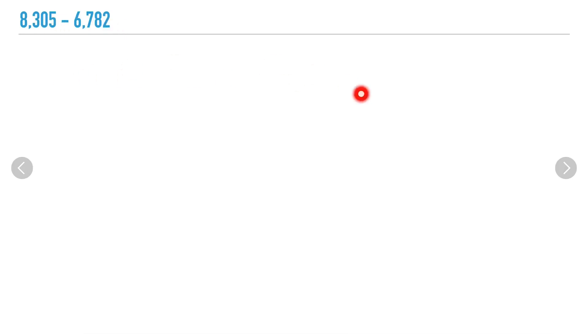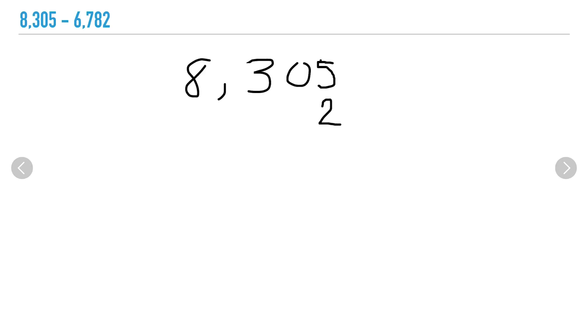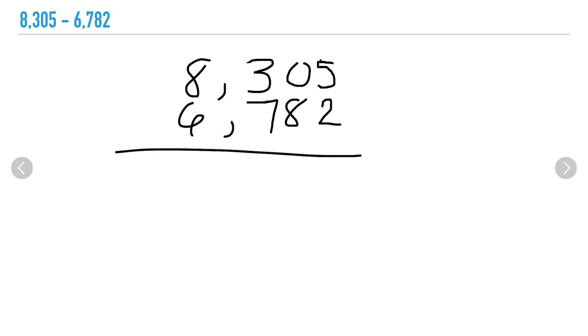You can line them up by starting with your ones, or you can also line them up using a place value chart. I'm going to start with my ones and make sure that my ones are in the same place value, and now I'm going to fill in the rest of my number. Now that my numbers are lined up based on their place value, it's time to subtract.